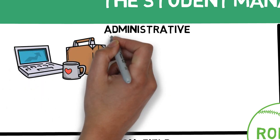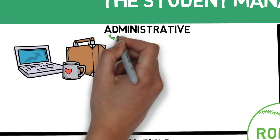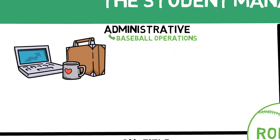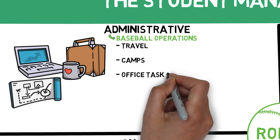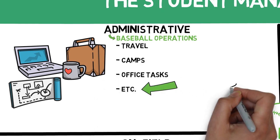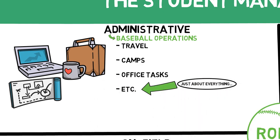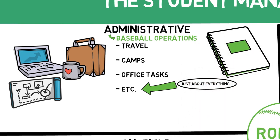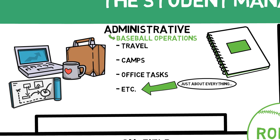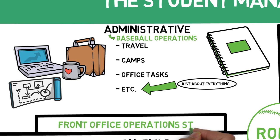Administrative managers are individuals who are going to help out with the baseball operations side of things. These are people who are interested in the more logistical side of planning team travel, assisting with camps, various other office tasks, and much more. For each of these, I want to tie their involvement to a job they could pursue after graduation. So someone in this role would be someone who wants to work in front office operations, whether that's for an MLB team or for a college. We have one individual in this role who does an unbelievable job assisting in our day-to-day operations.